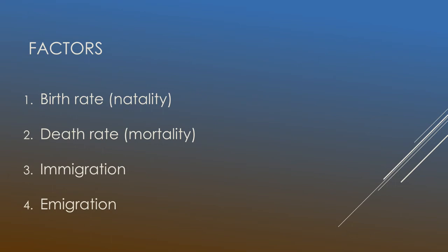Birth rate, as you probably already know, is the ratio between births and individuals, and it's sometimes referred to as natality. The death rate is the ratio between deaths and individuals, and also known as mortality.